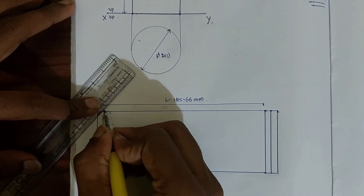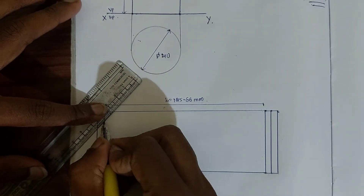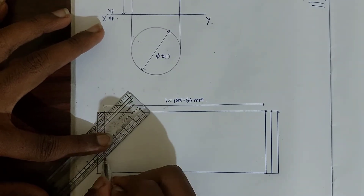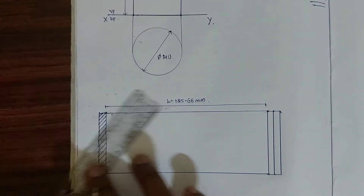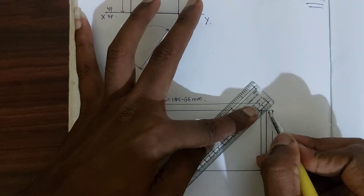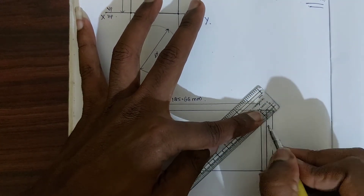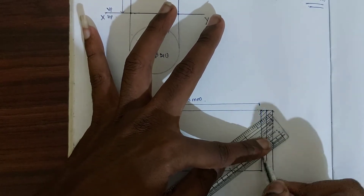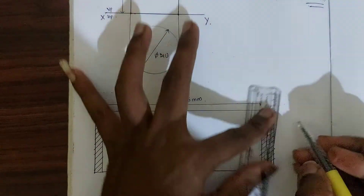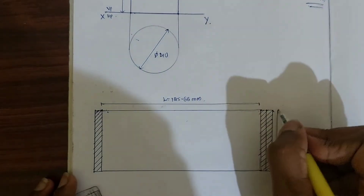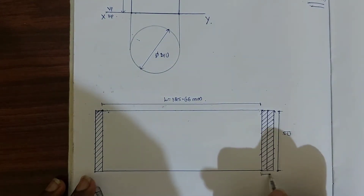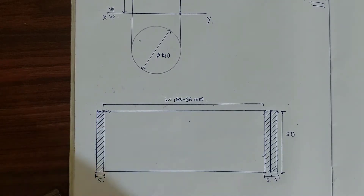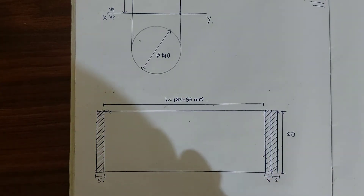Hatch this part to clearly show which is the seaming part and which is the solid part of the cylinder. The height is 50mm, with 5mm seam allowance on each side. This completes the development of the cylinder.